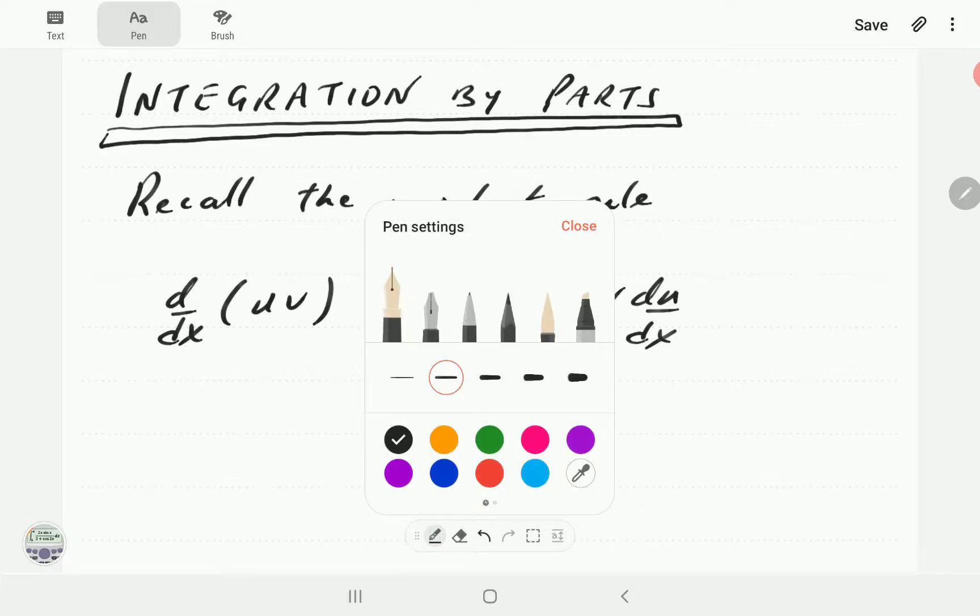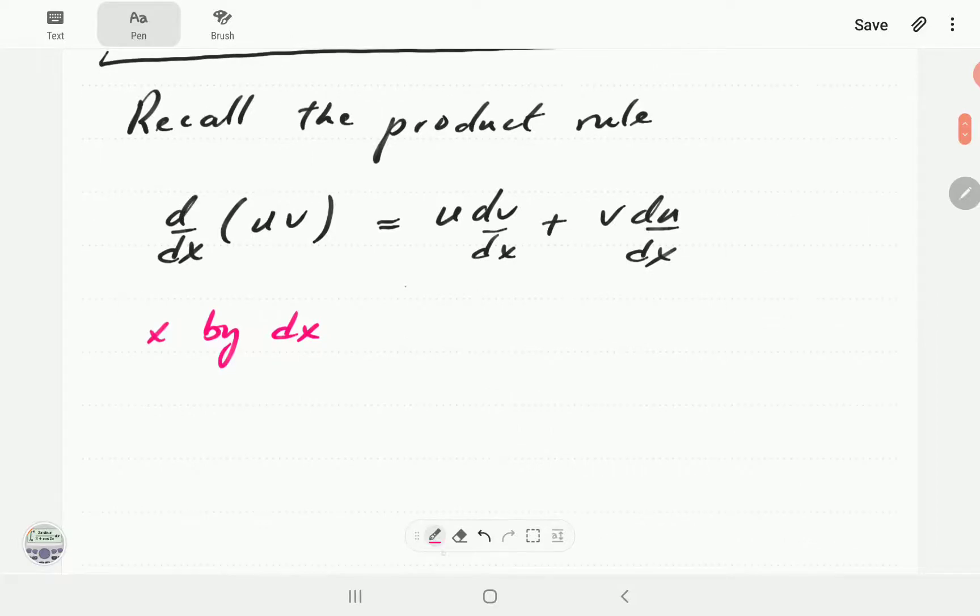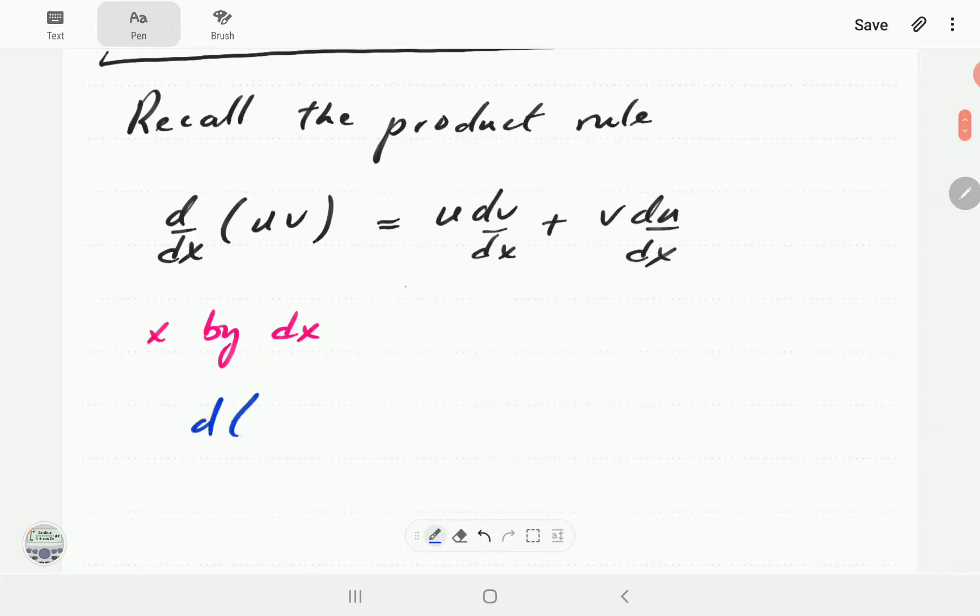So what I want to do here is we're going to multiply by dx. If we multiply everything by dx, then that formula on the left hand side is just going to be d(uv). On the right hand side we're going to have u dv plus v du.